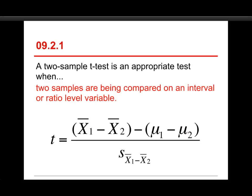You want to use a two-sample t-test when two samples are being compared on an interval or ratio level variable. Looking at the formula for the two-sample t-test: in the numerator we have x-bar sub 1, the mean for group 1, and x-bar sub 2, the mean for group 2. There are two groups, so it's two samples. These are means, so you need variables where you can compute means — that means interval or ratio, or quantitative, with no open-ended or undefined scores.